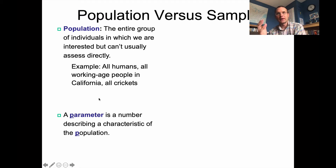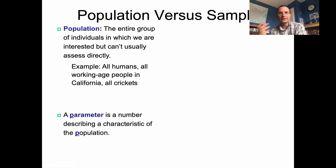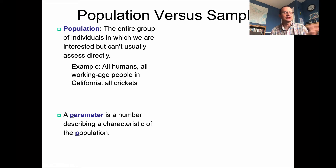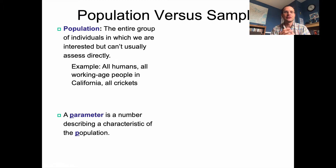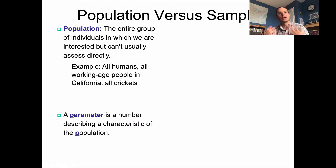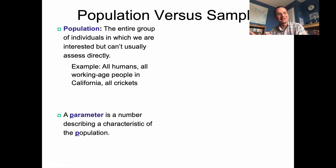That specific number — how many people in Alberta have been vaccinated — is a parameter, which is a number describing a characteristic of the population. Normally we talk about parameters in terms of the mean value or the standard deviation. But if they apply to a description of every single member of a group, then they're a parameter rather than a statistic.